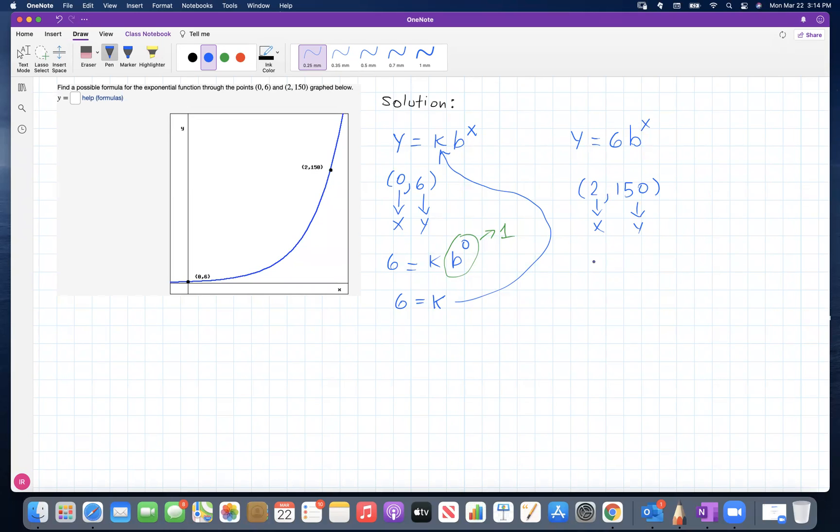Substituting y for 150 and x for 2 here, this is what we get - an equation that we can solve for b. Dividing both sides of this equation by 6, we get b squared equals 150 divided by 6, which should be 25.